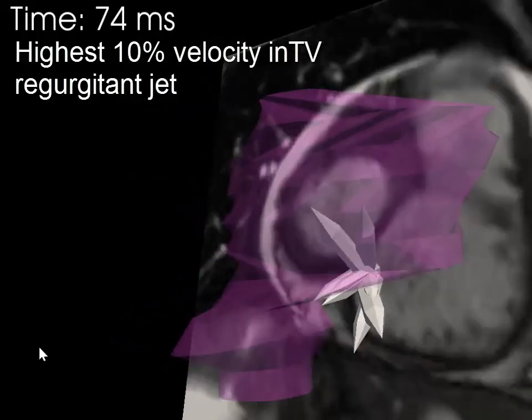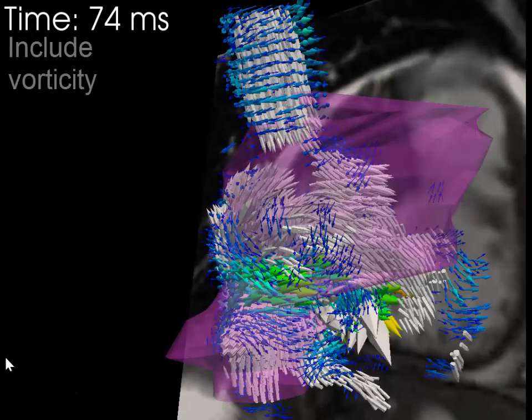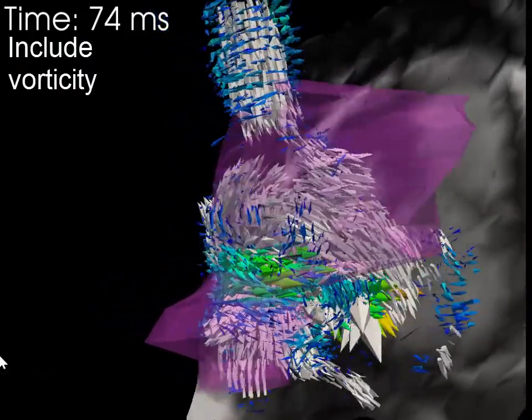However, this patient has a significant tricuspid valve regurgitant jet which increases mixing in the atrium.